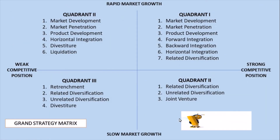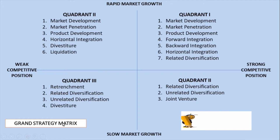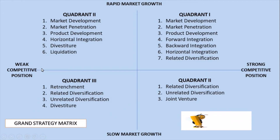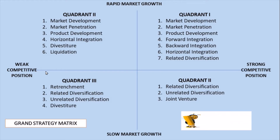Next we have the Grand Strategy Matrix. According to MBA knowledge.com, a Grand Strategy Matrix is an instrument for creating alternative and different strategies for the organization. All companies and divisions can be positioned in one of the four strategic quadrants. The Grand Strategy Matrix is based on two dimensions: competitive position and market growth. Quadrant one is on the right side and quadrant two is on the left side.